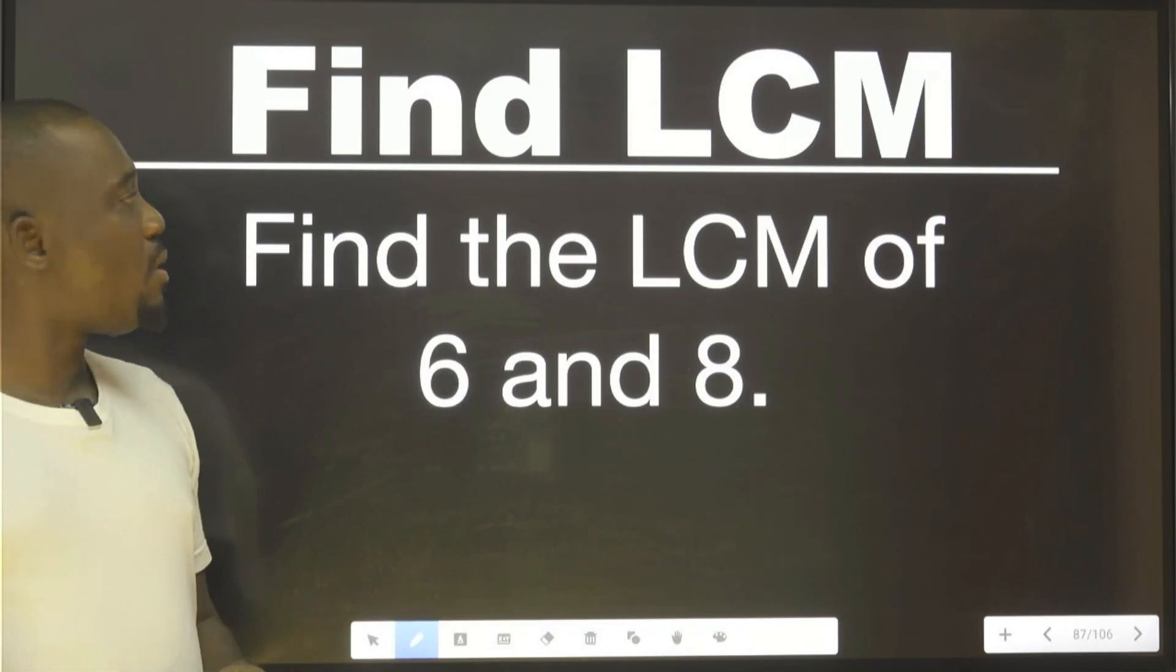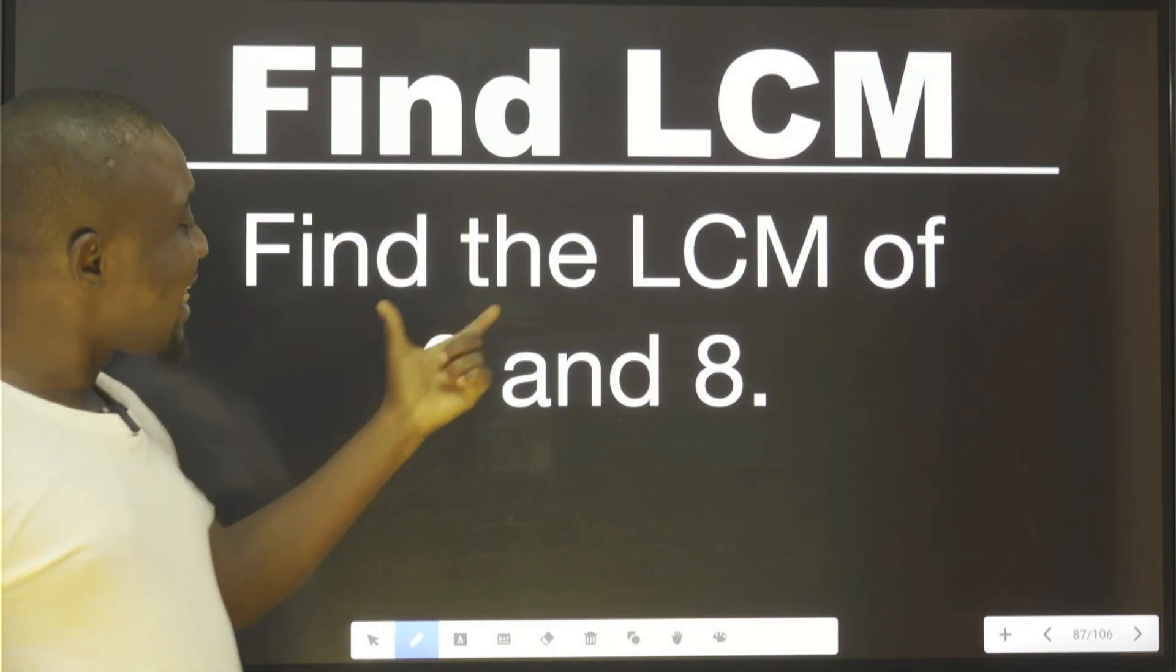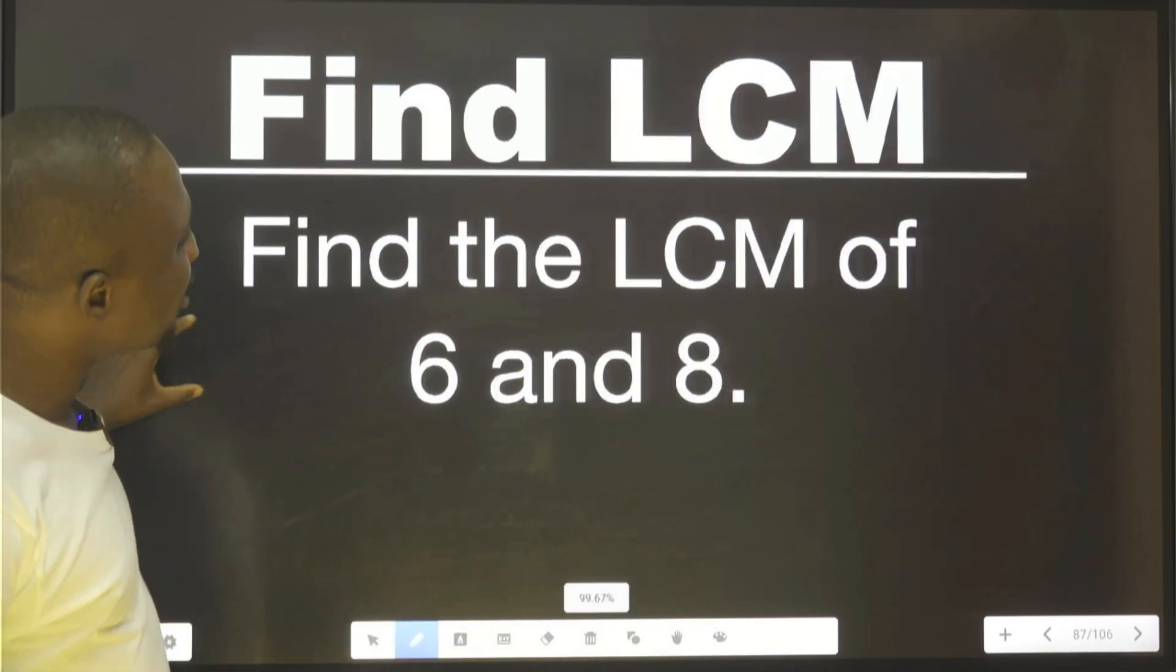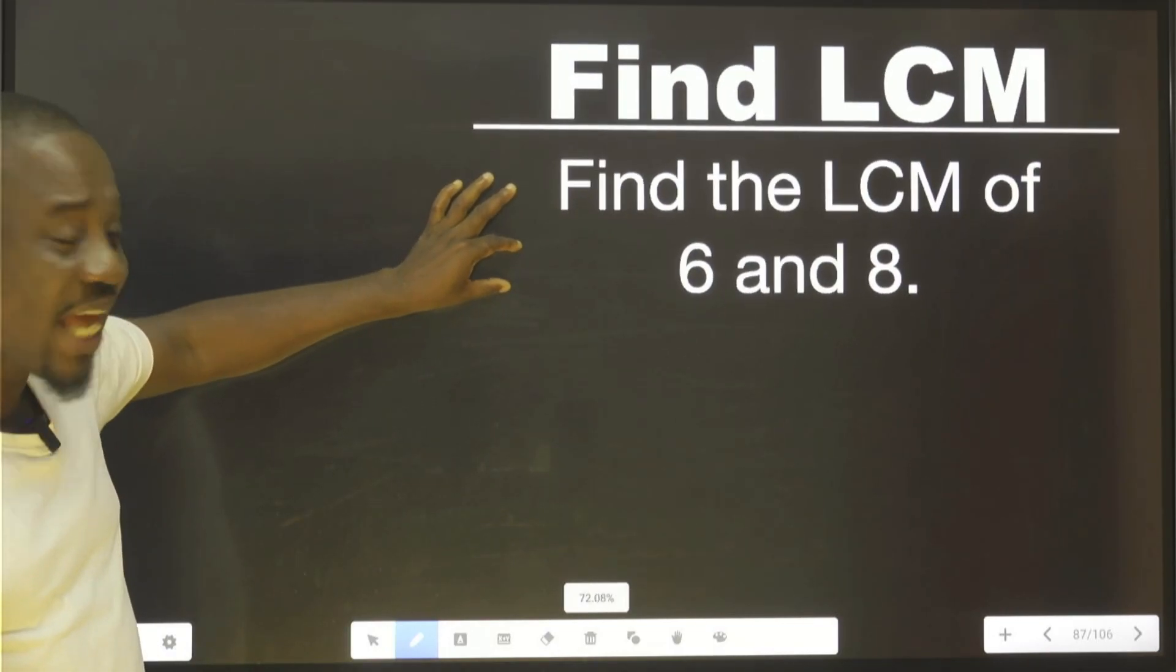Hi, you are welcome to this section on finding LCM. We are asked to find the least common multiple of 6 and 8. What is that? How do you do it very fast without error?